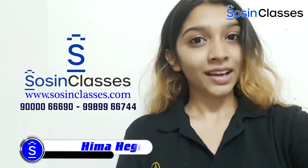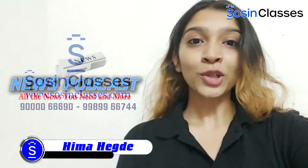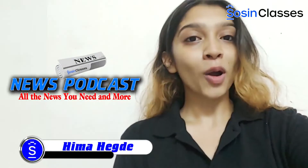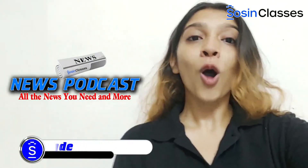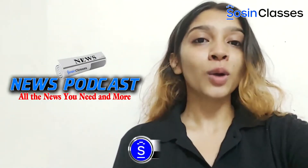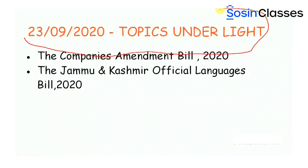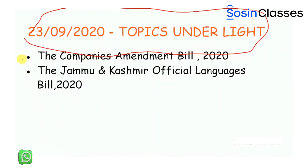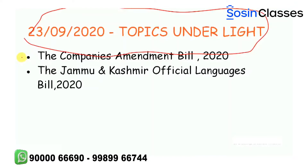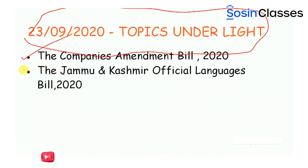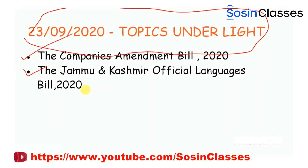Hi guys, this is Hima Hegde, bringing to you the daily news podcast at Sourcing Classes. All the news you need to know and more. To begin with, let us look at the topics under focus for today. In today's session, we will be discussing two bills, namely the Companies Amendment Bill 2020 and the Jammu and Kashmir Official Languages Bill 2020.